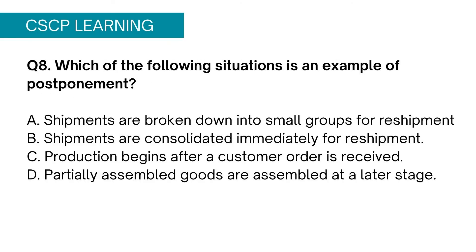Question 8: Which of the following situations is an example of postponement? Option A, shipments are broken down into small groups for reshipment; Option B, shipments are consolidated immediately for reshipment; Option C, production begins after a customer order is received; Option D, partially assembled goods are assembled at a later stage. Postponement is a supply chain strategy in which final differentiation of a product is delayed until the latest possible time — for example, subway sandwiches. Options A and B are talking about shipments, so they have nothing to do with the postponement strategy.